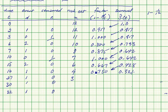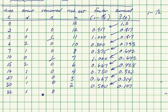Two thirds survive at time twenty-seven, so 0.667. We do our multiplication again and get 0.214. One from three leaves two. At time thirty, one survives and one does not, so 0.500. We do the multiplication and get 0.107. We subtract one — one from one leaves zero — and our survival function goes to zero. That's all there is.